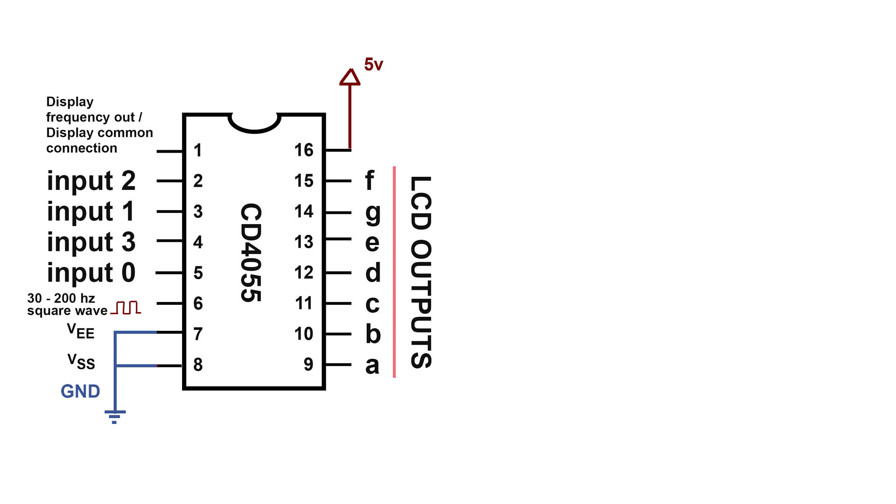Next, we've got the inputs. They're in a weird order, which is a bit of a shame, but it goes input 2, 1, 3 and 0. Then on pin 6, we have our display frequency in, which is our square wave.